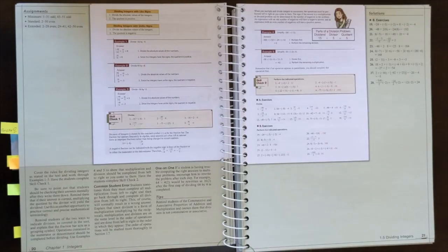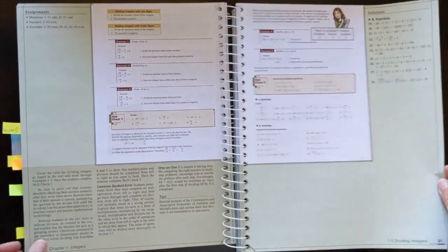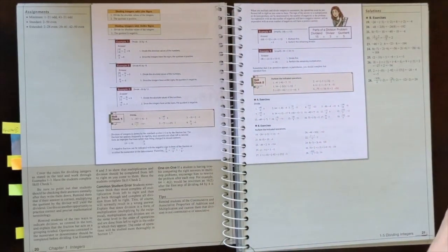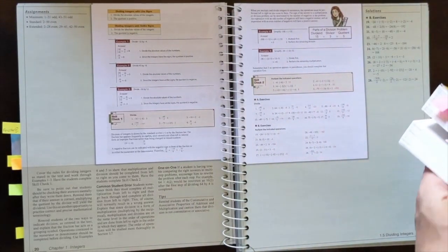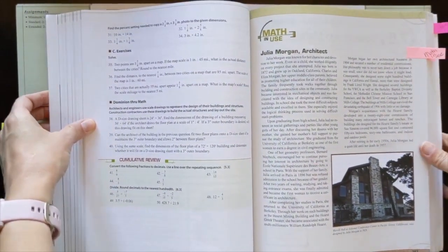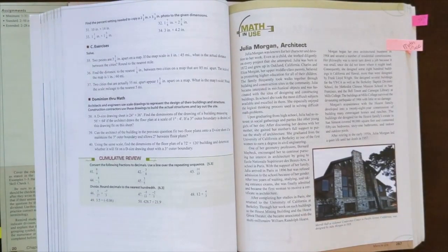In every chapter, you're going to find math and scripture where they focus on a biblical basis for each chapter. They're going to focus on a biblical basis for what the chapter is all about. Another thing that can be really helpful is math in use. This is something that's also going to help kids to see that real world application to what they are doing.